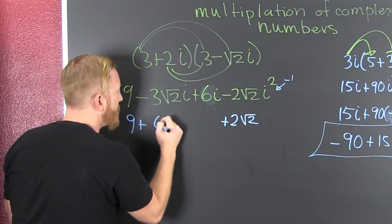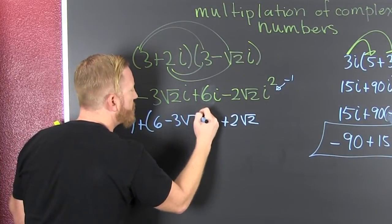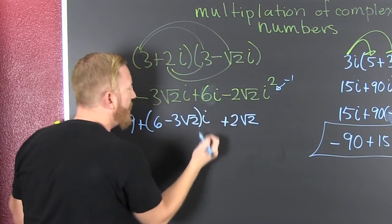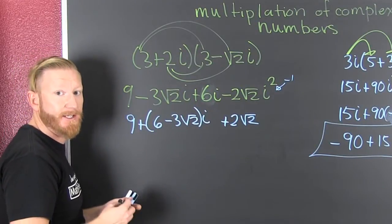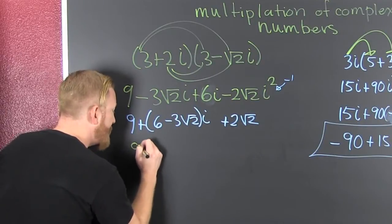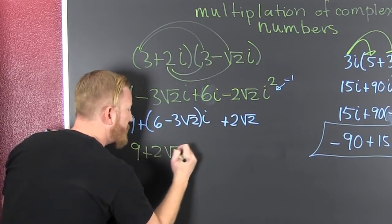Don't mind me if I commute the two. That's six minus three root two i. Need to put the real part and the imaginary part together. So then that's nine plus two root two. That's real.